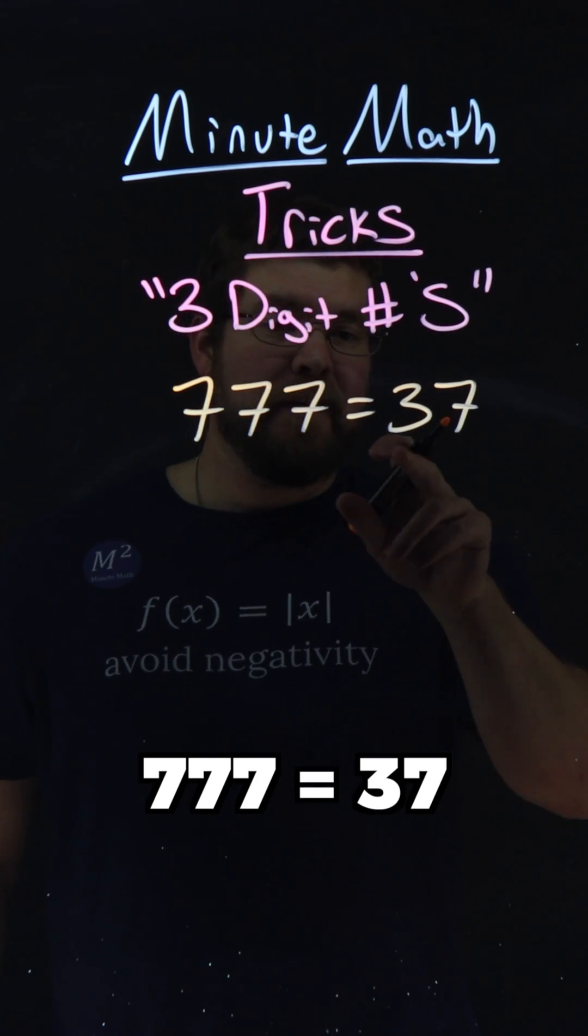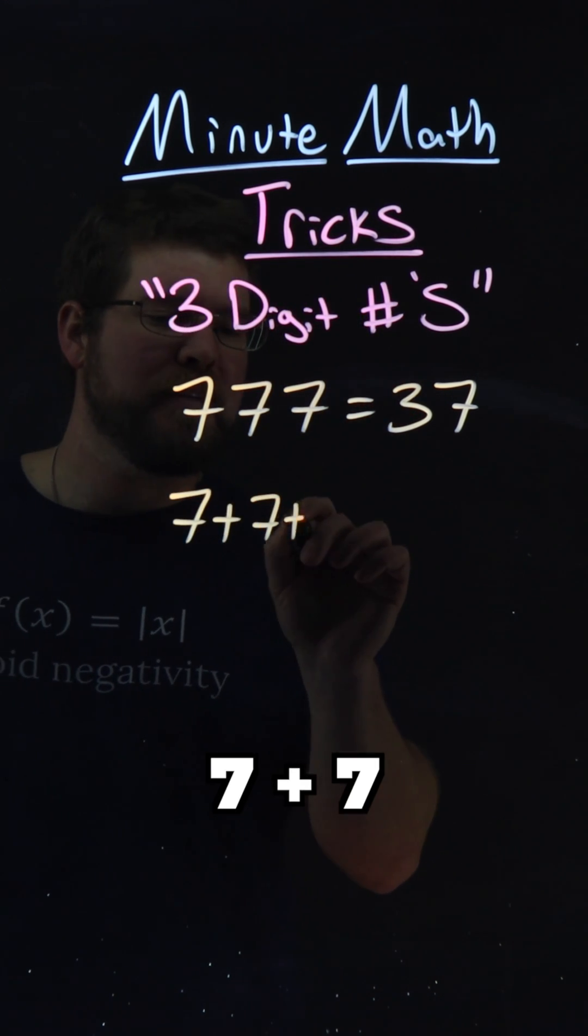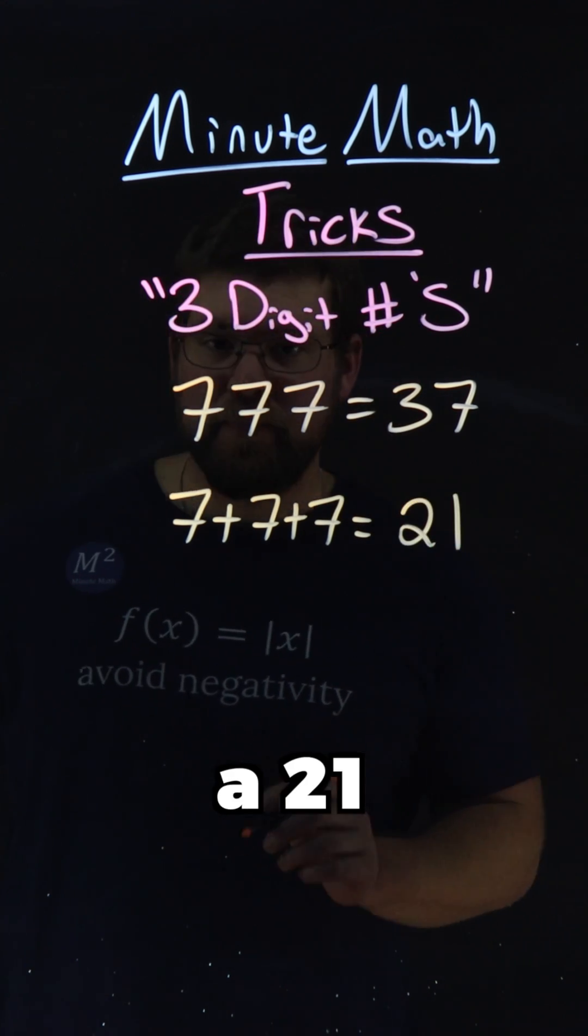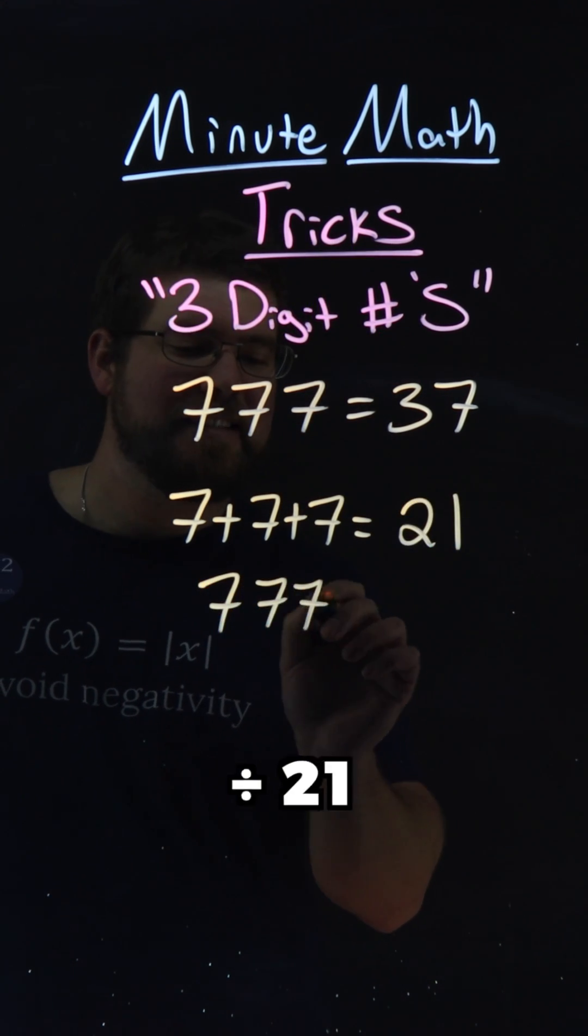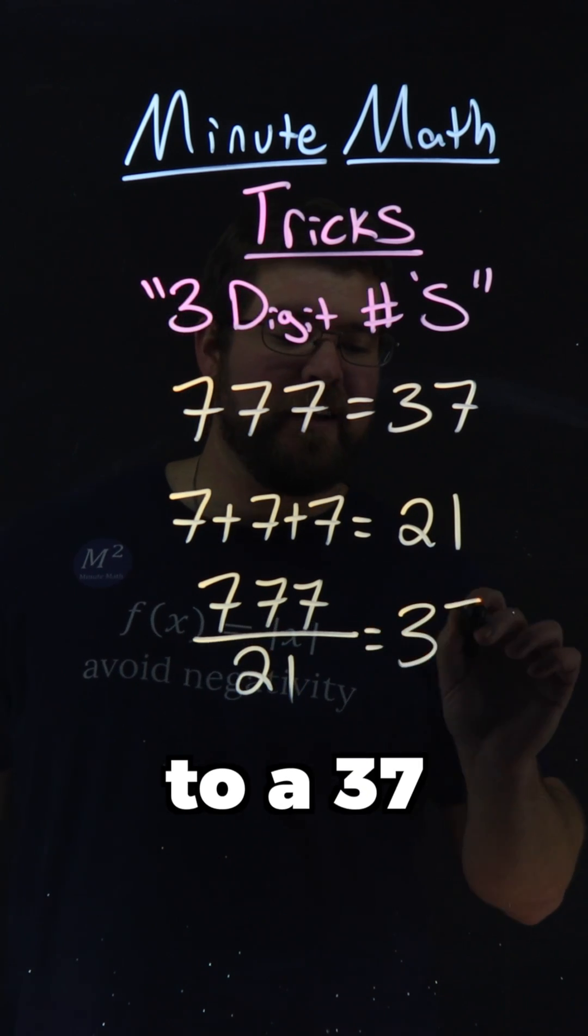777 equals 37. Let's add the 7s. 7 plus 7 plus 7 is equal to 21. 777 divided by 21 is equal to 37.